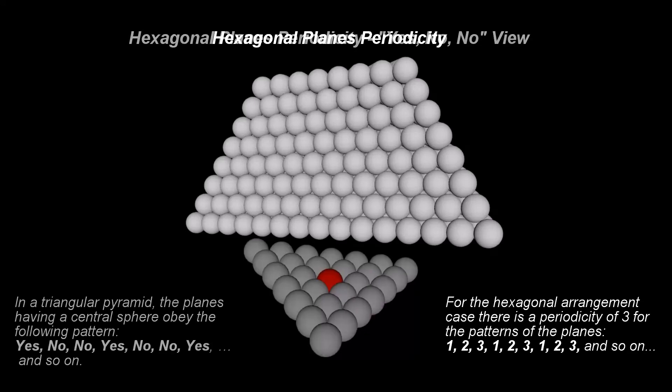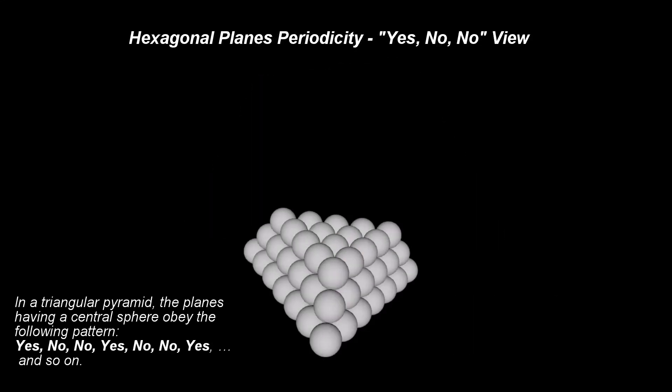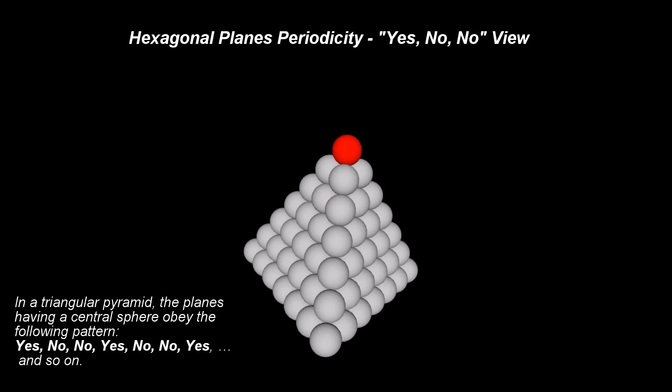Another way of looking at this periodicity is to observe the planes of a tetrahedron assembled from spheres. The planes having a central sphere obey the following pattern.